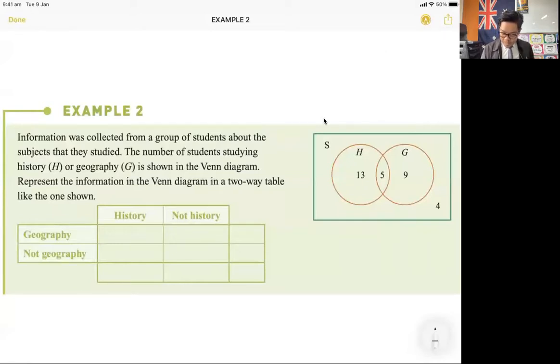Very similar to how we were dealing with Venn diagrams before, I want to start with that middle. That middle number is going to be very helpful for me. So how many people study both history and geography? We can see that there's five. So I'm going to look at H and G, history and geography. The people that study both, there's five, and I'm going to put that in the middle.